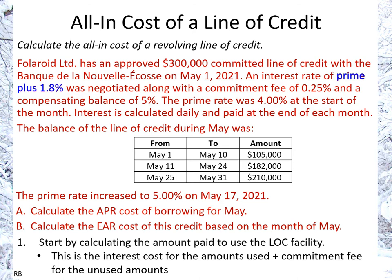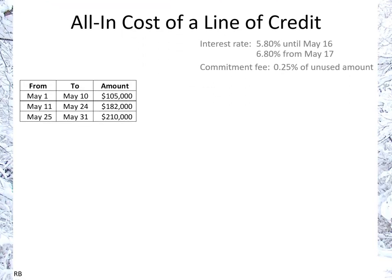The prime rate at the start of the month was 4%, and it was increased to 5% on May 17th. On the basis of 4% plus the 1.8% margin, we're looking at 5.8%, which had to be paid on all amounts until May 16th. From May 17th onward, we have 5% plus the 1.8% margin, so 6.8% total. The commitment fee is noted here.